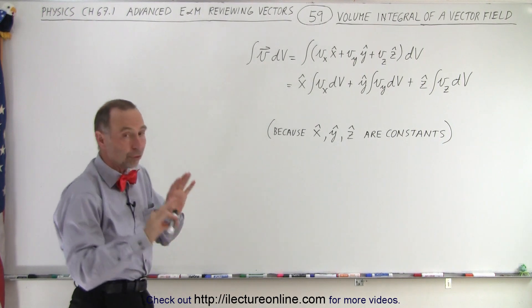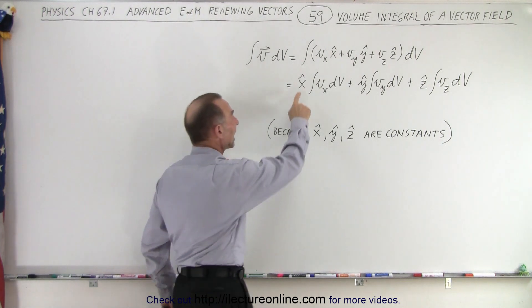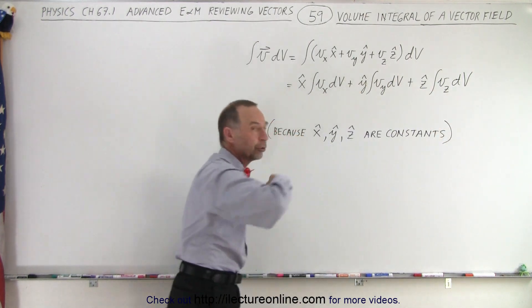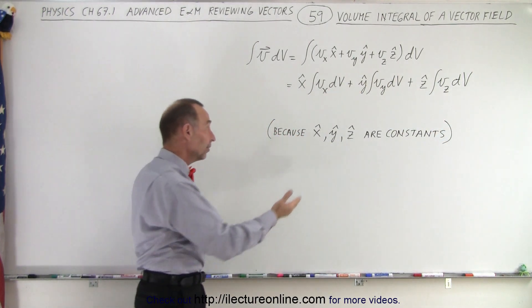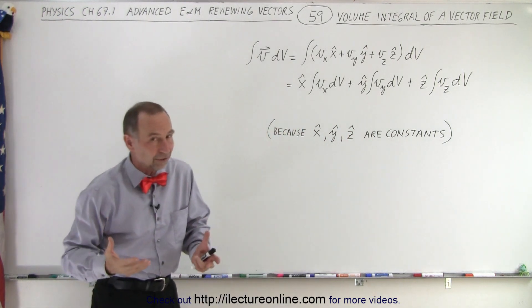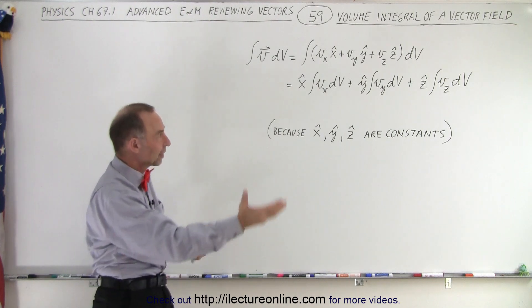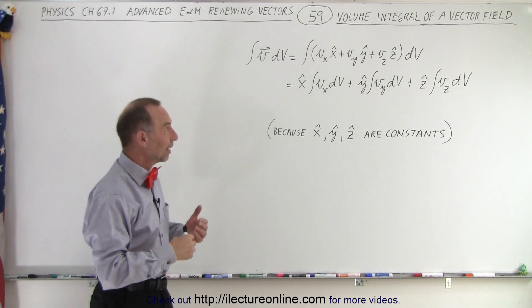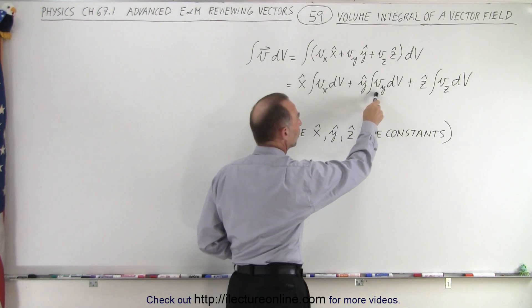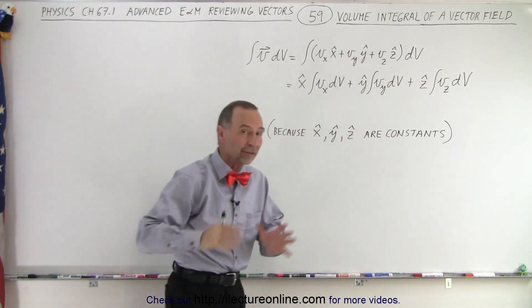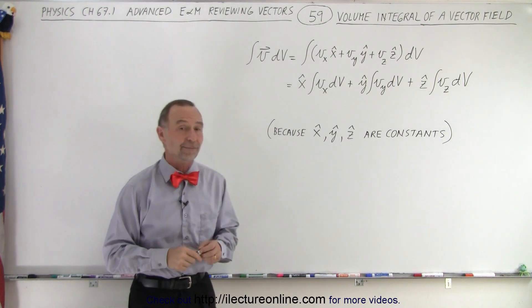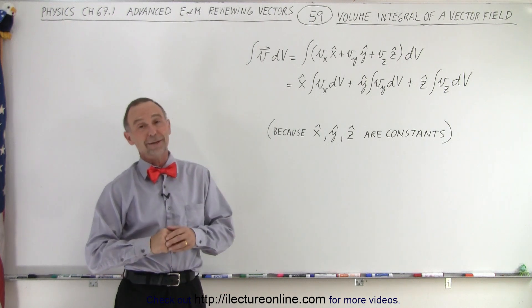We're able to break it out into three separate integrals because the x unit vector, the y unit vector, and the z unit vector can actually be pulled outside the integral. Why is that? Because the x, y, and z unit vectors are constant — they have the same length, they don't change, and therefore they can be taken out. So essentially we take the x component times dV, the y component times dV, and the z component times dV of our vector field, and we take the integral three times. That is how it's done.